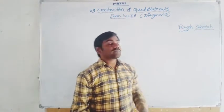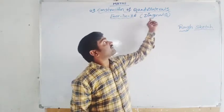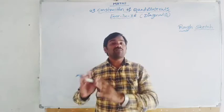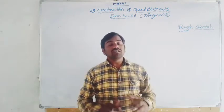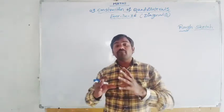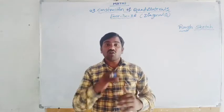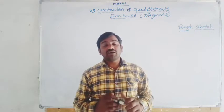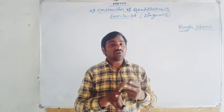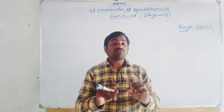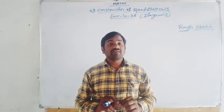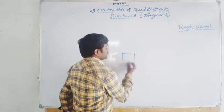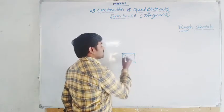We are going to construct the square and rhombus along with the diagonals. Only they will be giving you diagonals. With the help of the diagonals we are going to construct, because see the similarity of rhombus and square — in the rhombus all the sides are equal, in squares also all the sides are equal. But in the rhombus, diagonals are not of equal length — in the rhombus diagonals are different in length. But in the square, diagonals are equal.